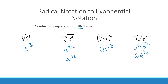Either of those can be reduced down. a to the 6/12 is the same thing as a to the 1/2, and b to the 6/12 is the same thing as b to the 1/2. Or you could write it as (ab) raised to the 1/2 power. These two mean the exact same thing.